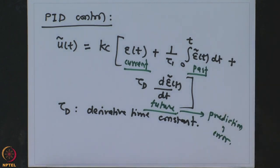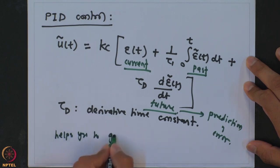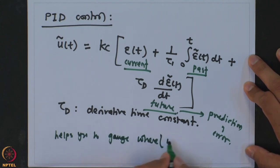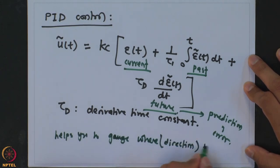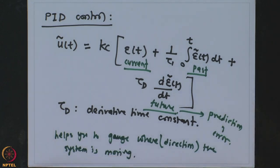Because of the prediction of error, the controller is able to fine-tune the response and gauge in which direction the system is moving. Hence you make a correct move so that the system reaches the final value at a faster rate. Let me elaborate on that point.